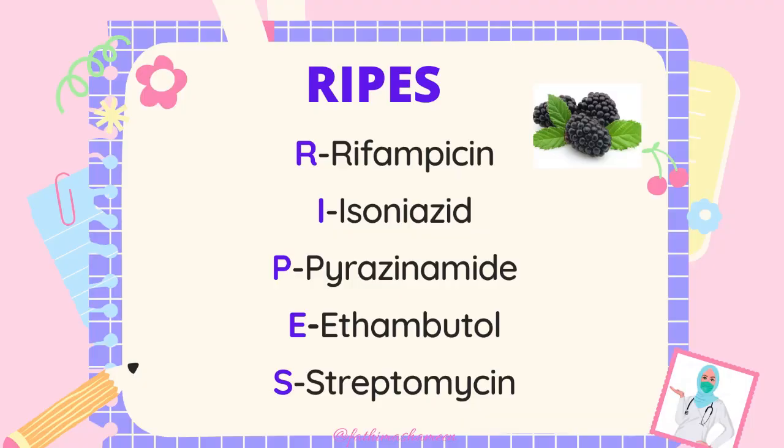According to science, this is the best method to remember hard and tough information like drug names. If you use this method well and practice it, you can even store the information into your long-term memory. If you're taking a particular class of drug, you can list out the drugs in that class and remember the first letters of each drug to form a word. For example, first-line TB drugs can be remembered with the acronym RIPES: R for rifampicin, I for isoniazid, P for pyrazinamide, E for ethambutol, and S for streptomycin.